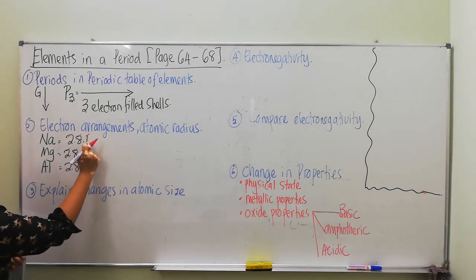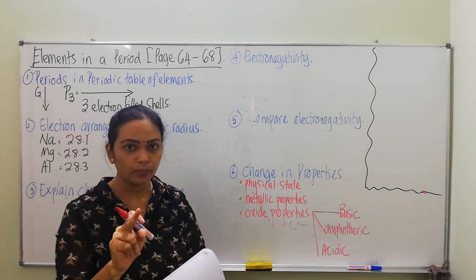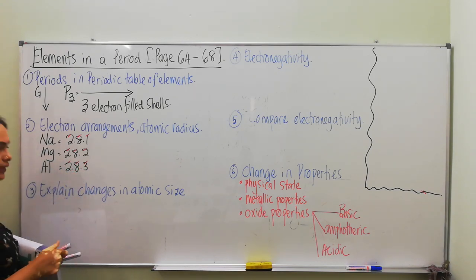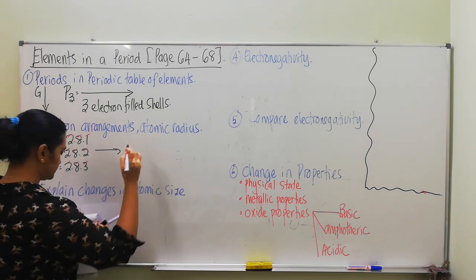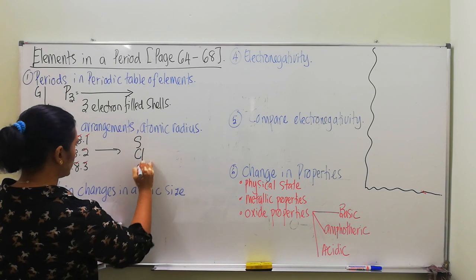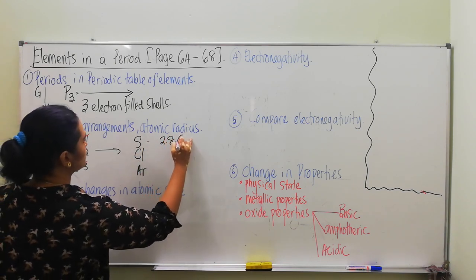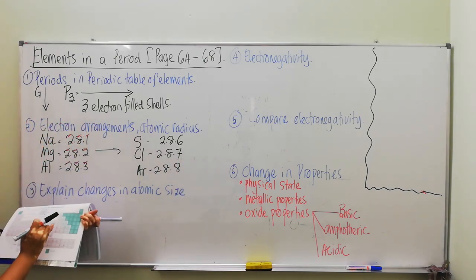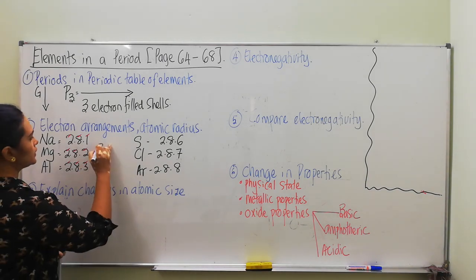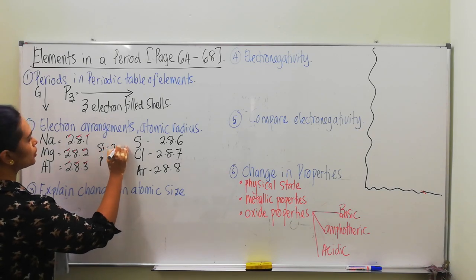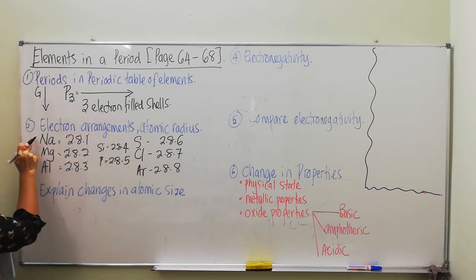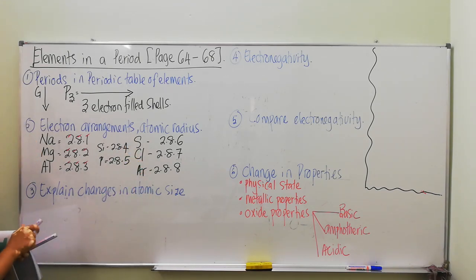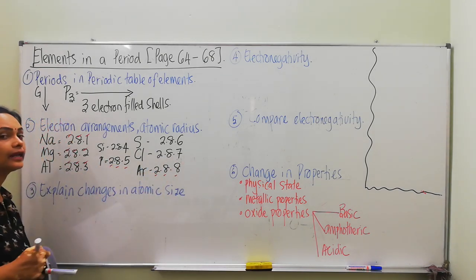Our focus is not on the valence electron because teacher has already discussed that regarding the group. Your focus must be on the electron filled shells. That is the reason why from sodium up to argon — for example, sulfur is 2.8.6, chlorine is 2.8.7, argon is 2.8.8. In between you also have silicon 2.8.4 and phosphorus 2.8.5. So reading across: sodium, magnesium, aluminium, silicon, phosphorus, sulfur, chlorine, argon — all of them have only three numbers written, which is why we say 3 electron filled shells.